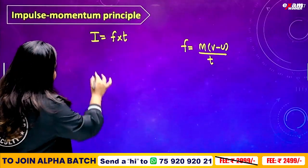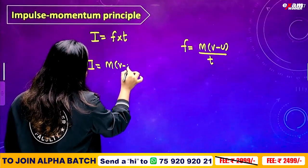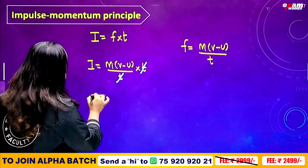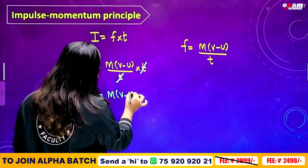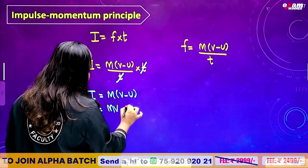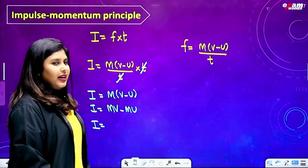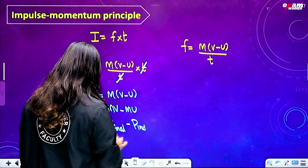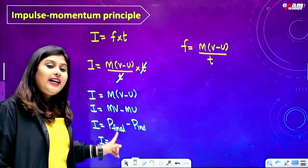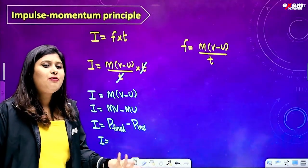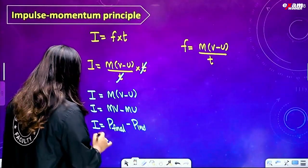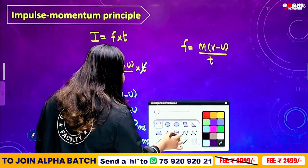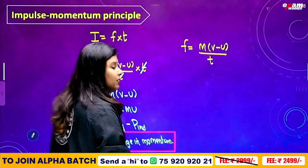So substituting into the equation, I = m(v − u)/t × t. The t's cancel, giving impulse equals m(v − u), which equals mv minus mu. That is final momentum minus initial momentum. So impulse equals change in momentum. I is equal to change in momentum.